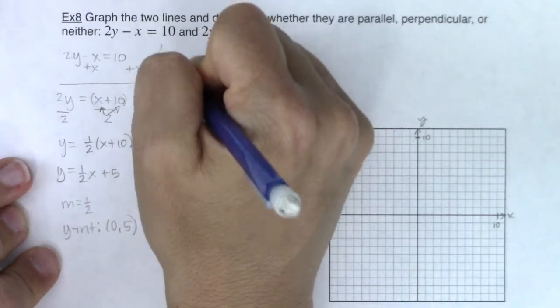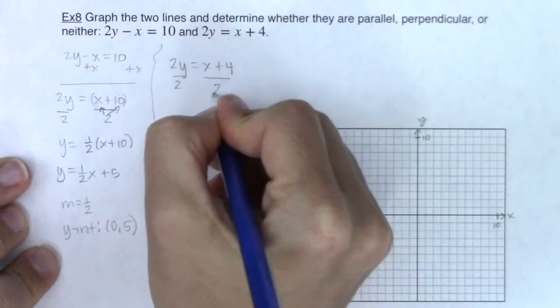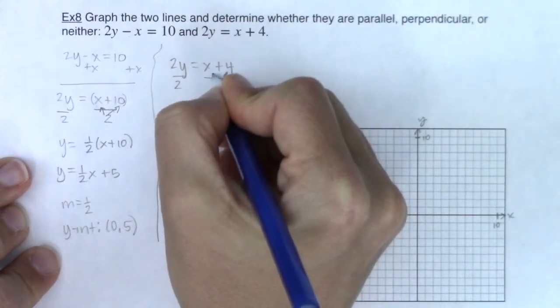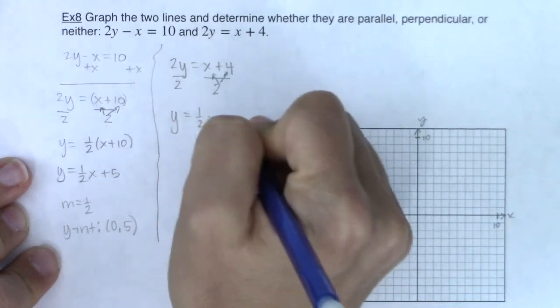All right, now let me take a look at this one. We have 2y equaling x plus 4. Well, this one all I have to do is divide by 2. And again, I'm going to be real careful. I'm going to alien ear it. So I will get y equaling 1 half x plus 2.